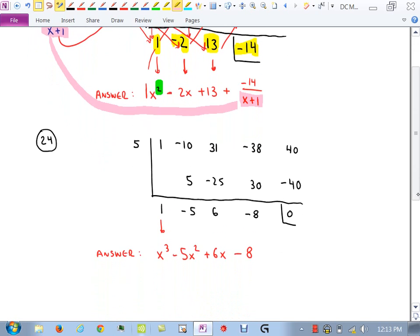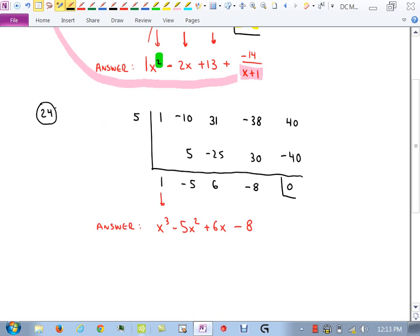Okay, on the last problem here on the review, we had the original problem was x to the fourth minus 10x cubed plus 31x squared minus 38x plus 40, all divided by x minus 5. So we looked at the numbers here, 1, negative 10, positive 31, negative 38, positive 40. We put those numbers here. We take the opposite of negative 5, which is positive 5, and then we do our synthetic. And I'll let you go through that yourself. The important thing is you get a remainder of zero, which means that these numbers represent our coefficients.